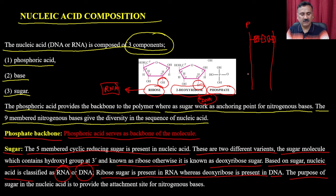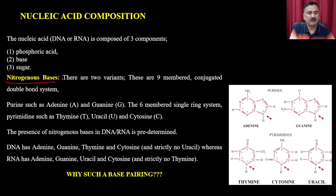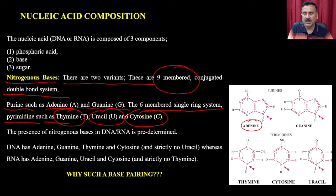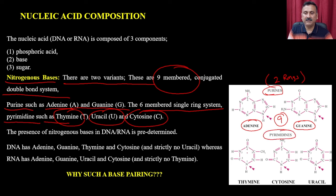The nitrogenous bases have two variants: a nine-membered conjugated double-bond system. One variant is Purine, the other is Pyrimidine. Purines — adenine and guanine — are the two-ring structures. Pyrimidines — thymine, uracil, and cytosine — are six-membered single-ring structures. If you have two rings, it is a purine; if it is a single ring, it is a pyrimidine.